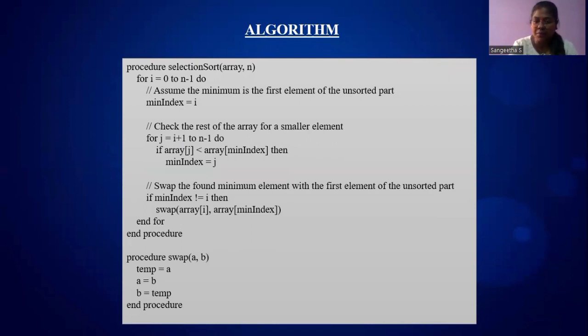In procedure swap of a, b, we use the parameters a and b. In the previous function, we called the swap function with parameters array[i] and array[minIndex]. So a is array[i] and b is array[minIndex]. Temp equals array[i], array[i] equals array[minIndex], array[minIndex] equals temp, and then it ends the procedure.